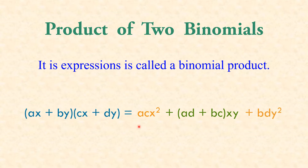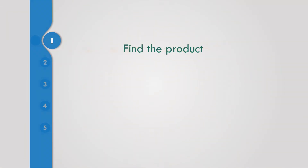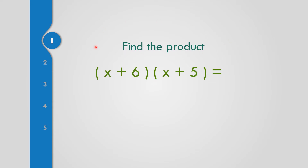That could be the way in getting the product of two binomials. Let us find the product of two binomials. The quantity x plus 6 times the quantity x plus 5. First, we need to multiply x times x — that is x².